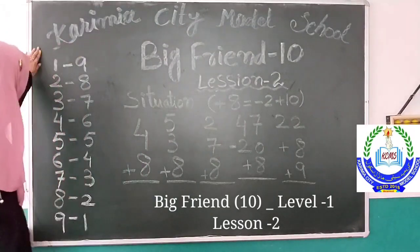Good morning students, welcome to Kareemya City Model School. Today we are going to start Big Friend Lesson 2. As we learned from the previous class, number 10 is the Big Friend, which is a common friend of all these numbers. These numbers also have their best friends.